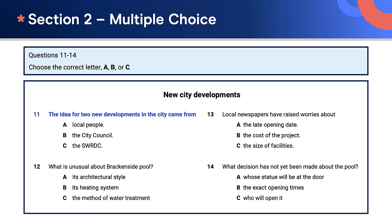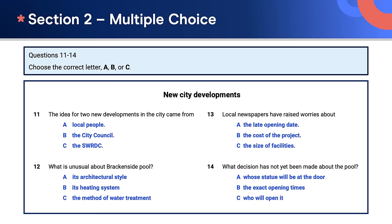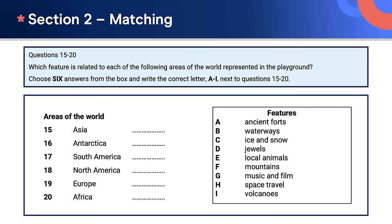The main thing to do is read the questions and note any keywords that will help you focus. For number 11, I want to know where the idea came from. For 12, I need to find the unusual detail. For 13, what are they worried about? And 14, what decision has not been made? You should read the answers quickly and listen carefully to catch any synonyms that might reveal the answer. Now have a look at the other question type — matching. For questions 15 to 20, the questions will come in the same order as the numbers, so for each question listen, note which feature they talk about, and select the appropriate letter.